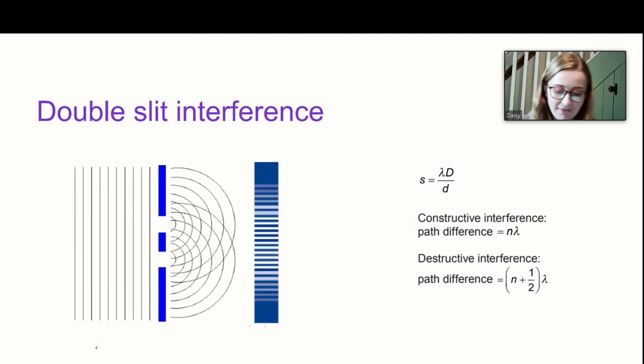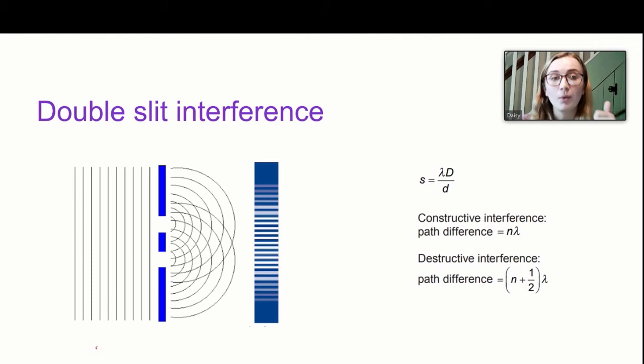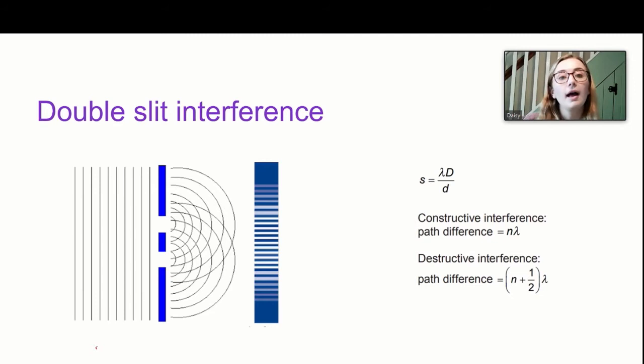The first thing we're going to look at is double slit interference. This happens when we take light, shine it through two slits, and see the pattern we get at the end. The light we start with must be coherent — meaning all the light must have a constant wavelength and a constant phase difference between two different sources. When we pass it through the two slits, the light diffracts and spreads out, so light from the two slits can interfere. The bright spots occur where a peak from one wave meets a peak from another, or a trough meets a trough.